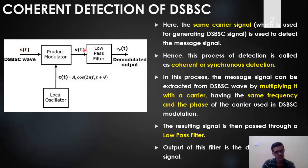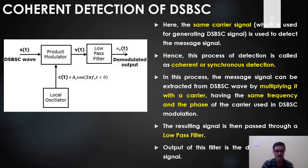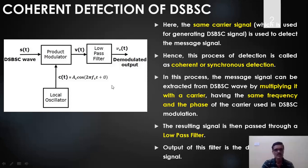v(t) consists of both the message signal as well as a high frequency signal, which we will see in the derivation. When applied to the low pass filter, the LPF allows only the low frequency signal — that is, the message signal. So v_o(t) should be the message signal; that is what we are expecting. Now let us understand how the demodulation process happens. v(t) is nothing but s(t) multiplied by c(t).